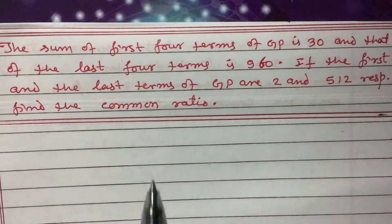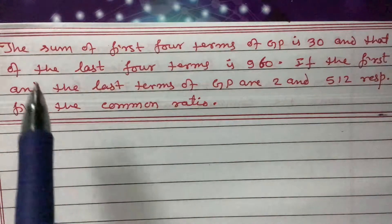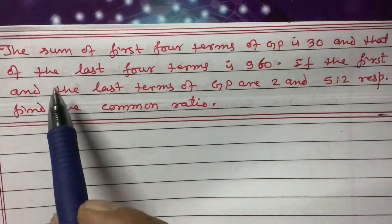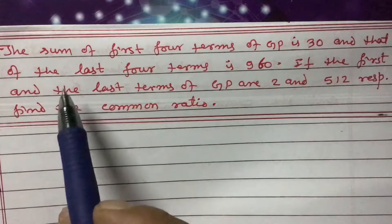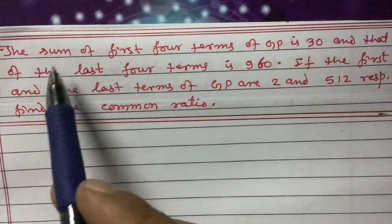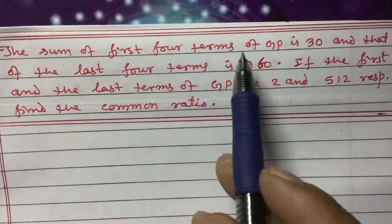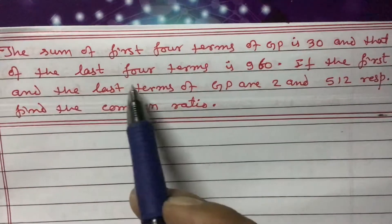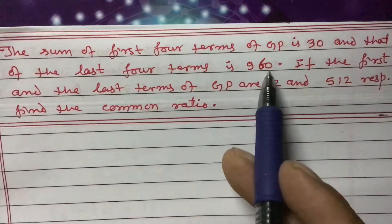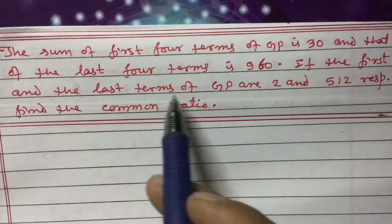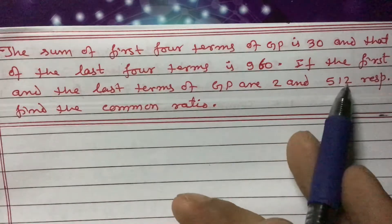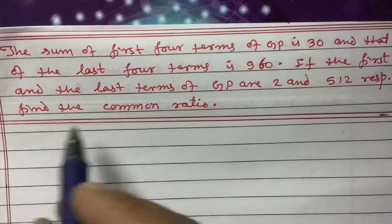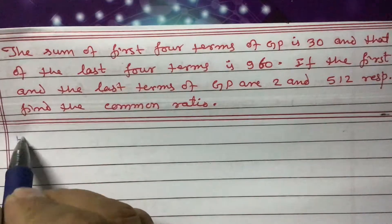Dear students, today I am going to teach you one question related to the content series of class 10. This is a very important question for your CE examination. The question is: the sum of the first four terms of a GP is 30, and that of the last four terms is 960. If the first and the last term of the GP are 2 and 512 respectively, find the common ratio.